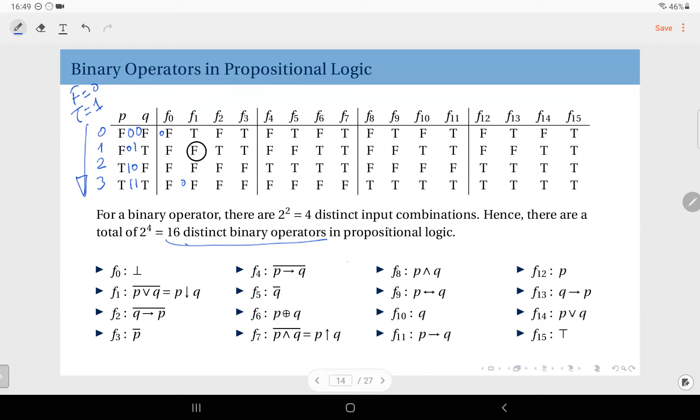So all possible binary operators in propositional logic are listed here. And some of them, as I said, we have already covered. Some of them are simple. So F0 is obviously the contradiction. Whatever input you give, it's false. It's just contradiction. It's never true. And this one, F15, is always true. Regardless of the input combination, it's always true. So it's just plain true.